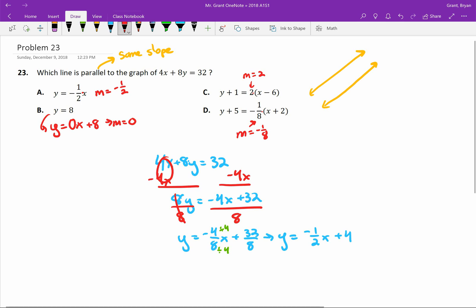Now I've isolated y and we should be able to identify our slope. The number multiplying by x is negative 1 half. Which one of these has a slope of negative 1 half? That is a. Those two lines are parallel because even though they start at different places they have the same slope.